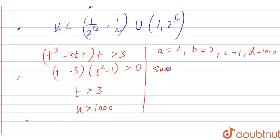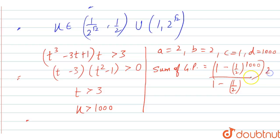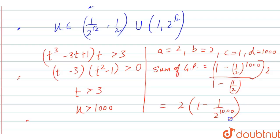Now we find the sum of the GP. The sum of the GP equals a · (1 − r^n) / (1 − r), where r = 1/2, n = d = 1000, and first term c = 1. So the sum equals 2 · (1 − (1/2)^1000) / (1 − 1/2), which simplifies to 2(1 − 1/2^1000). That is our final answer.